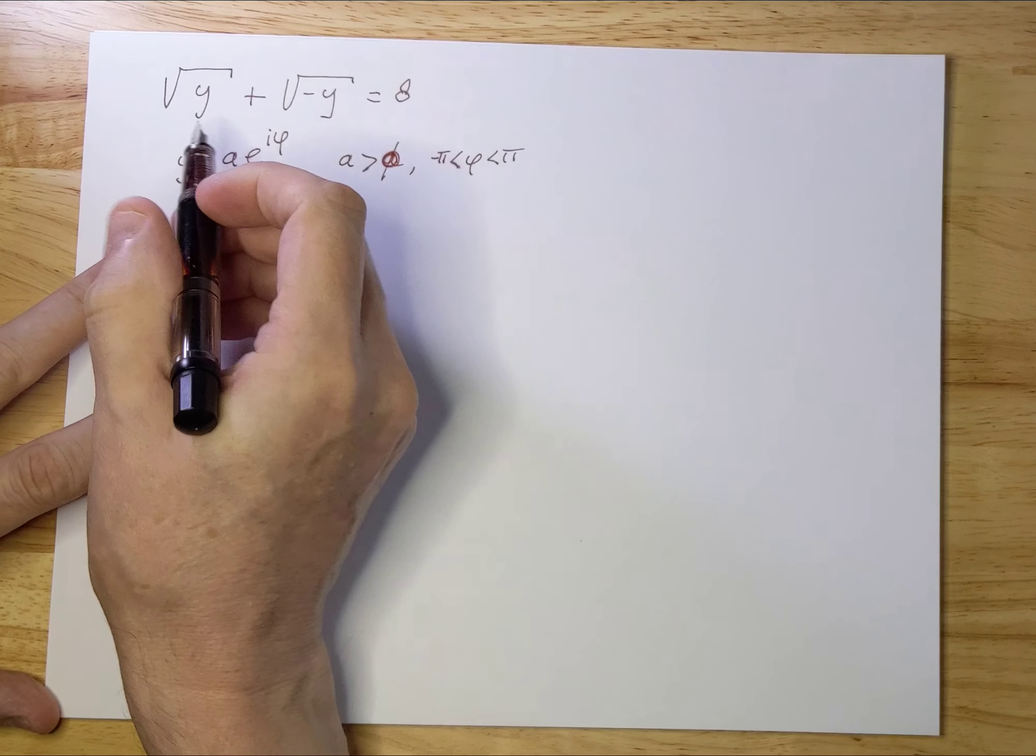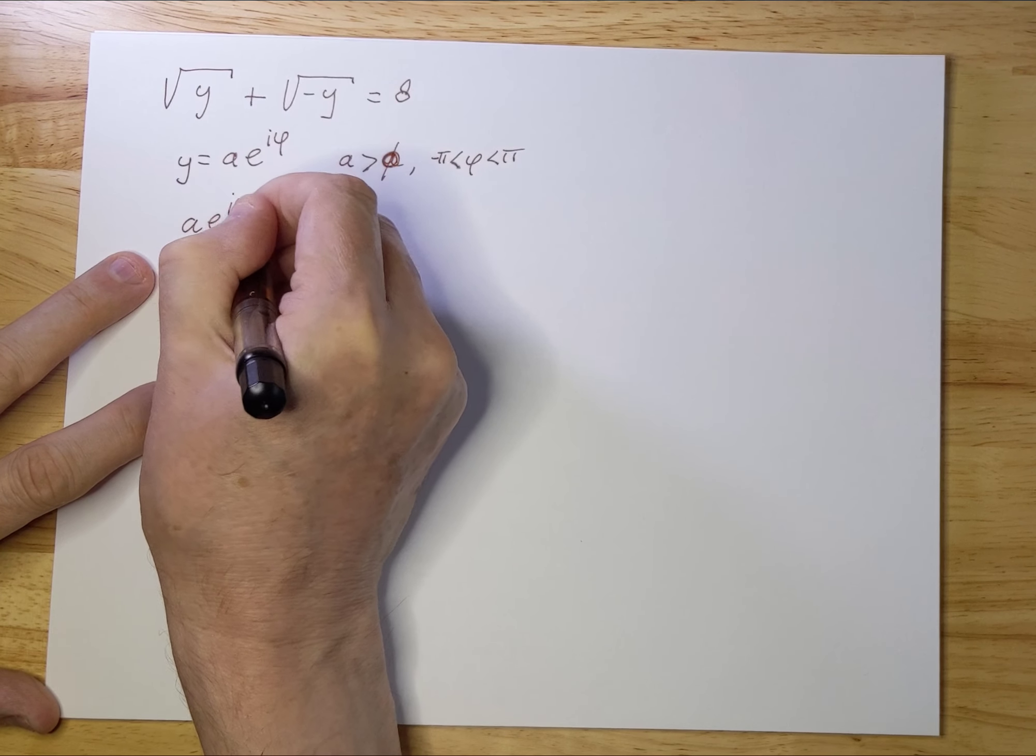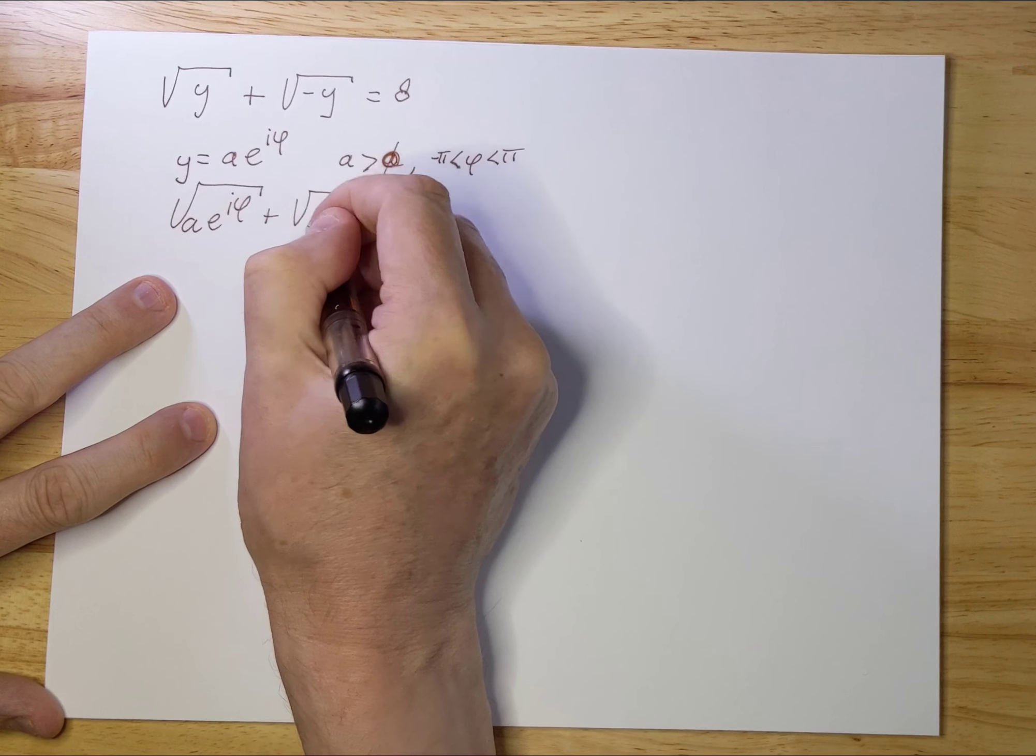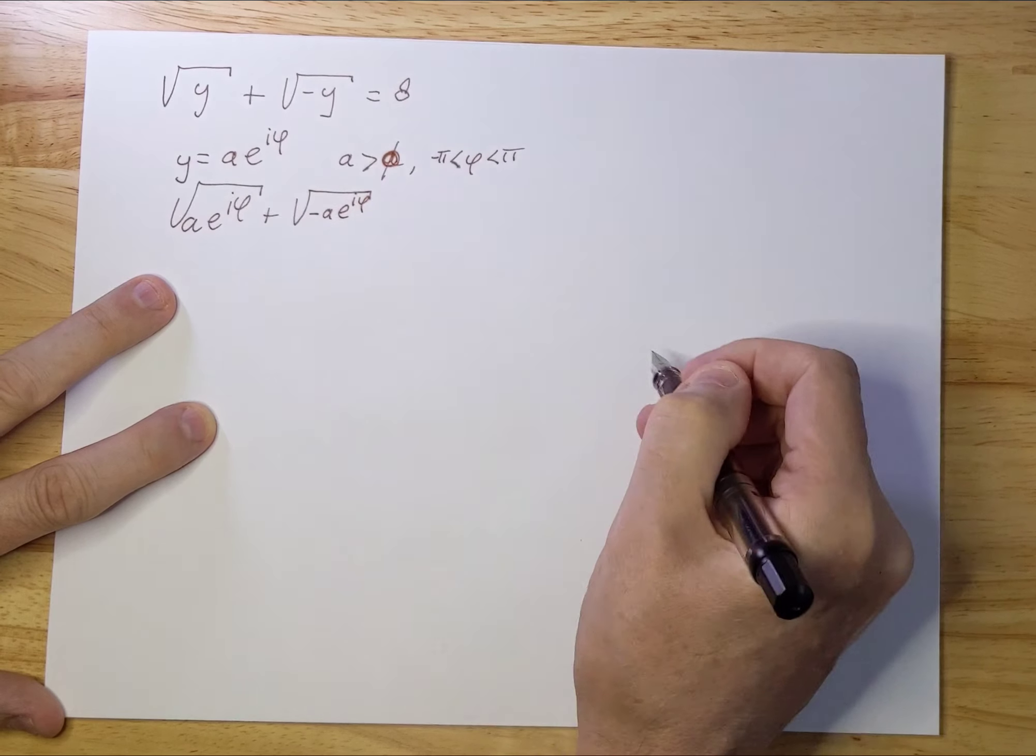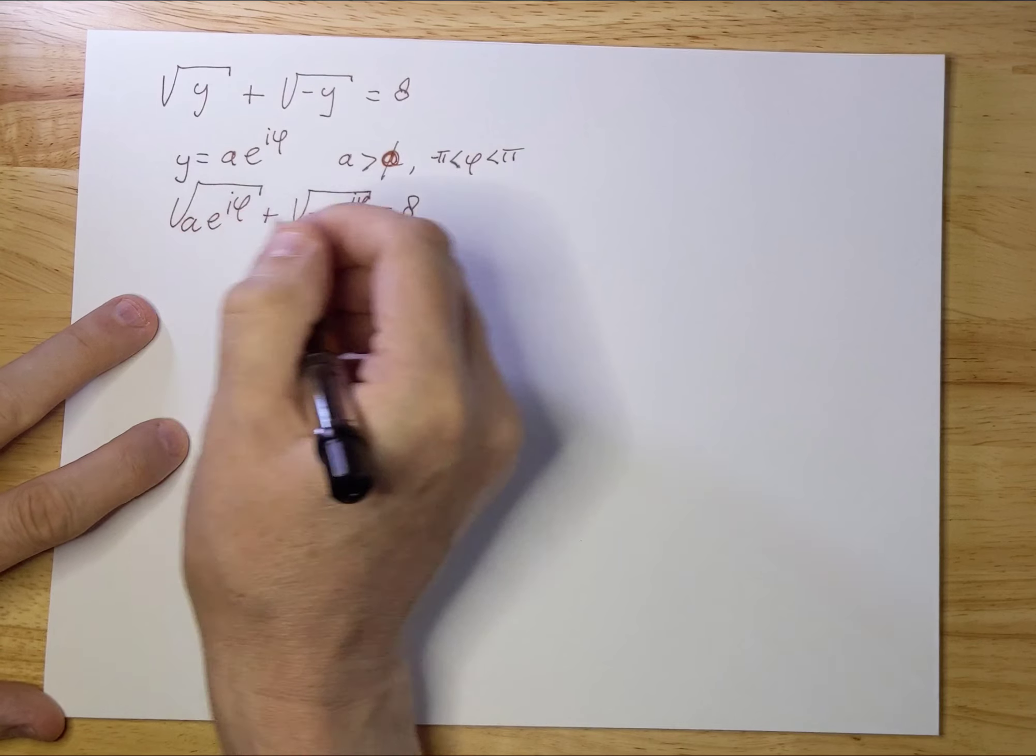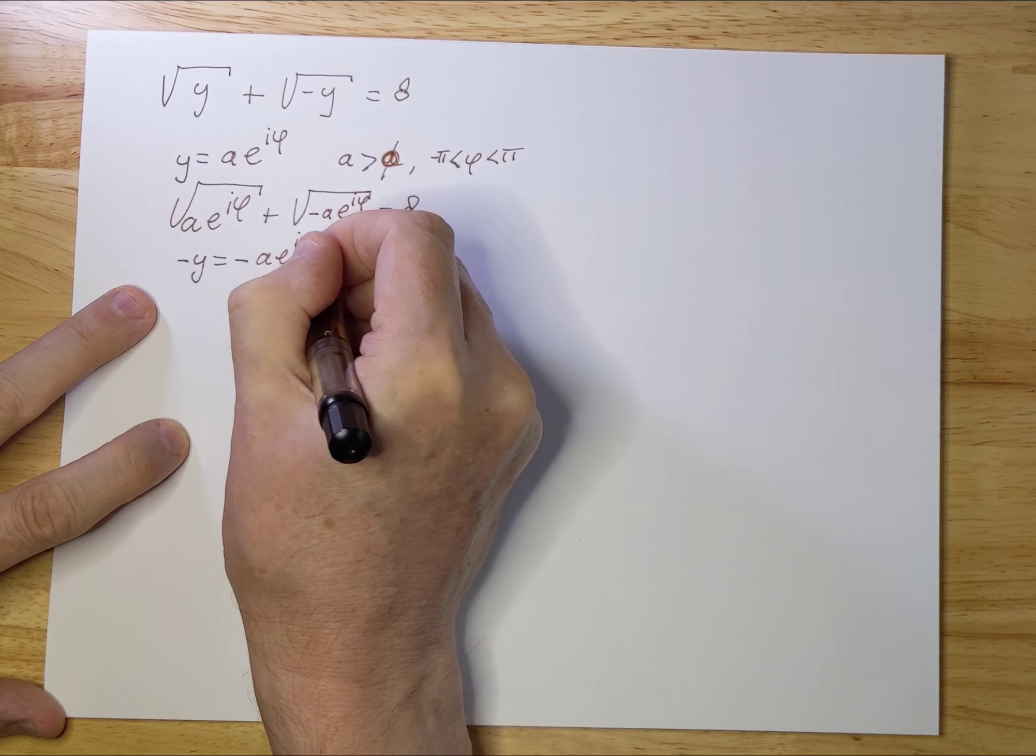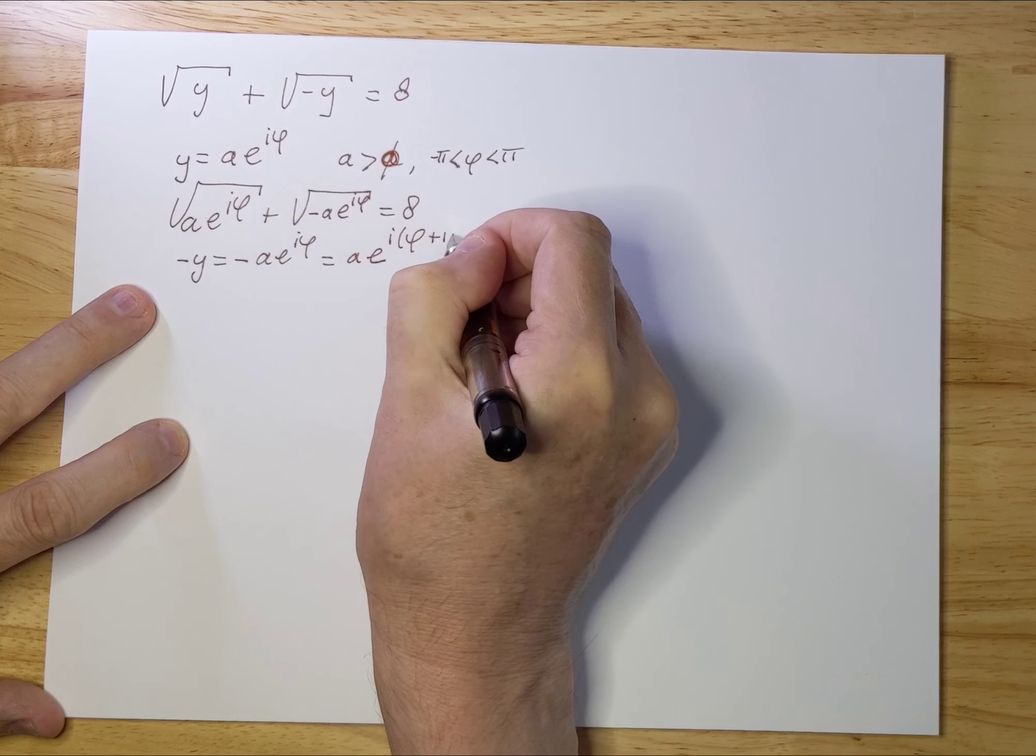Now I'm going to insert this into the equation, which gives: √(ae^(iφ)) + √(-ae^(iφ)). That -ae^(iφ) I can rewrite. I can say -y = -ae^(iφ) = ae^(i(φ+π)), because e^(iπ) = -1.